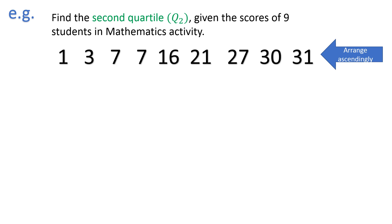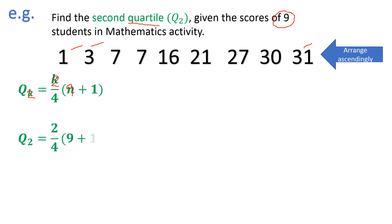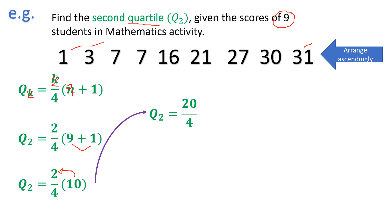Since we are talking about quartile, we use the formula under quartile: Q sub k equals k over 4 times n plus 1. For quartile 2, our k is 2. Our n is 9, since we have 9 students. So, Q2 equals 2 over 4 times (9 plus 1). Simplifying inside: 9 plus 1 gives 10. Then 10 times 2 equals 20, giving us Q2 equals 20 over 4, therefore Q2 equals 5.